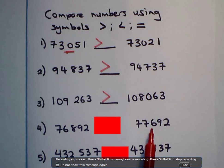So, the crocodile's mouth is going to face towards the right-hand side. So, therefore, you can say 76,892 is less than 77,692. The less than sign looks like an L.